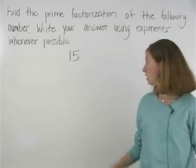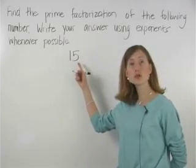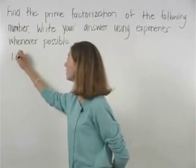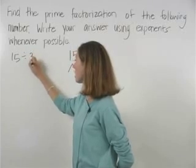To find the prime factorization of 15, first create a factor tree with two branches. Since 15 divided by 3 equals 5,